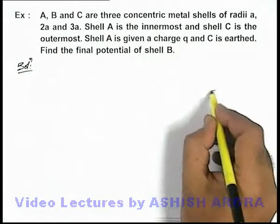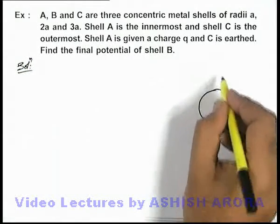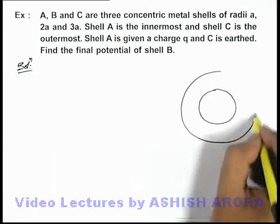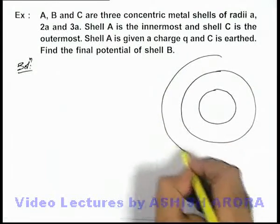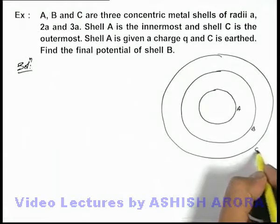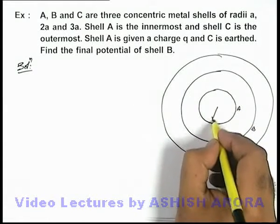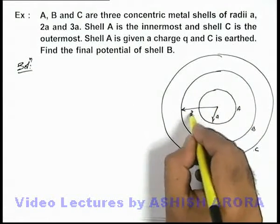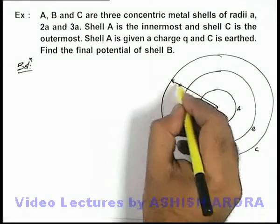In this situation, if we just draw the physical situation here, we can draw three concentric metal shells. These are named as A, B, and C, and we are given that the radii are a, 2a, and 3a respectively.